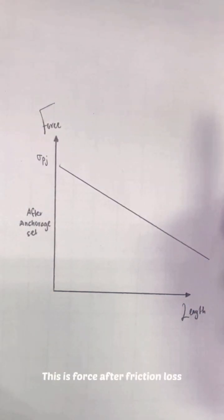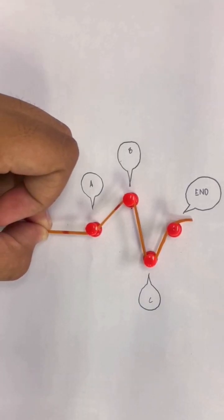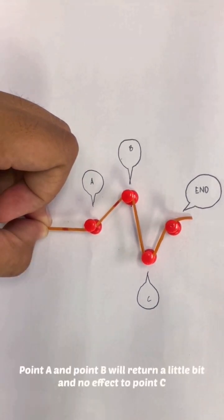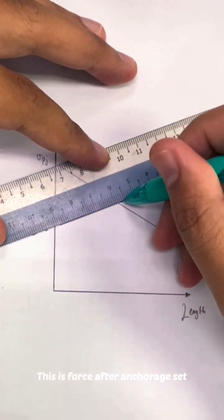This is force after friction loss. After that, once you release the force for locking the wedge, the wedge effect will create another loss from the mechanism. Point A and point B will return a little bit with no effect to point C. You can see here point A is moving more than point B. This is force after anchorage set.